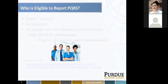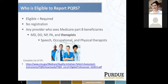Who is eligible to report PQRS? Eligible equals required — there's no registration to report PQRS. Any provider who sees a Medicare Part B beneficiary — MDs, DOs, NPs, PAs, and therapists including speech, occupational, and physical therapists. There is a link to a complete list of providers that are eligible to report PQRS as well.